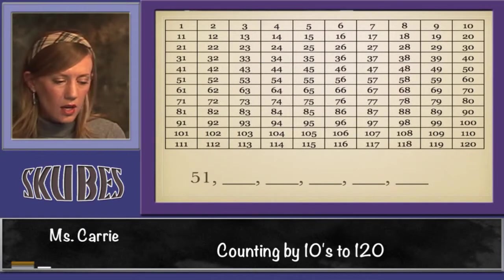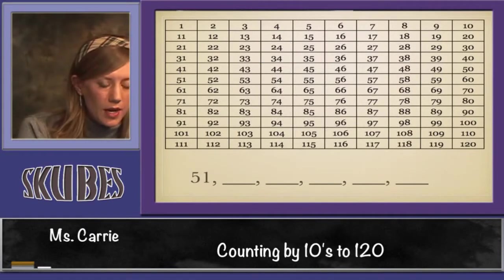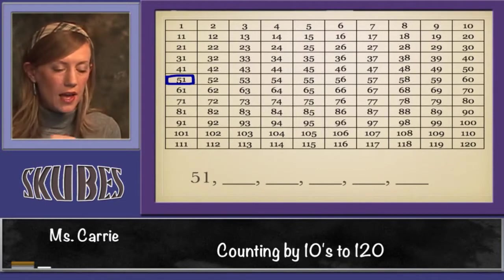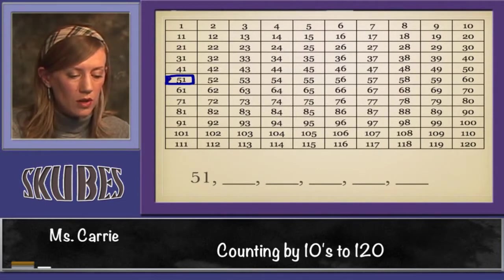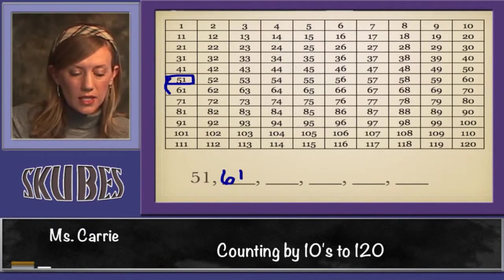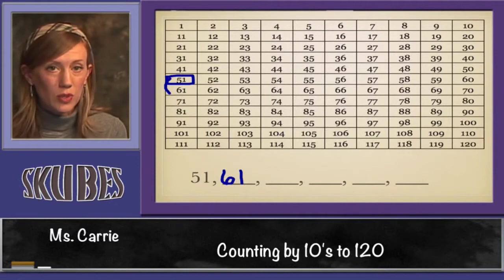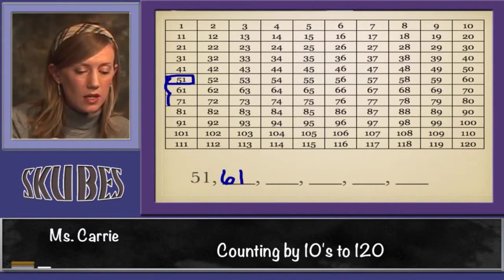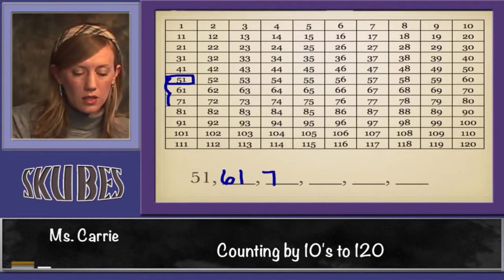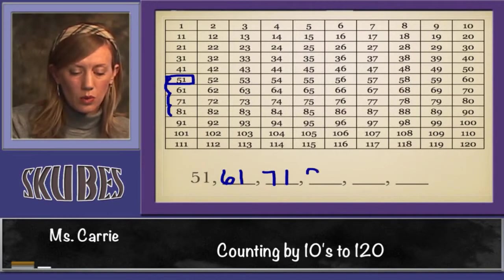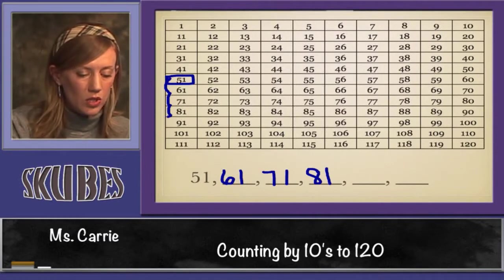Let's look at another starting point. Let's start at 51 this time. Here's 51. Let's add 10. Remember, we go down to the next row. Now we're at 61. Notice the 1 is the same, but the 5 changed to a 6 because we've jumped up 10. We go up again, we're at 71. We jump again 10, we're at 81. We jump again, we're at 91. 10 more, we stop at 101.